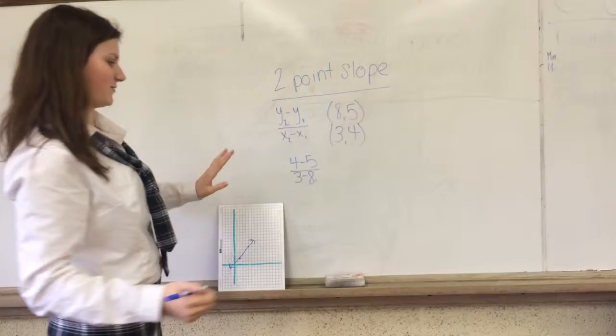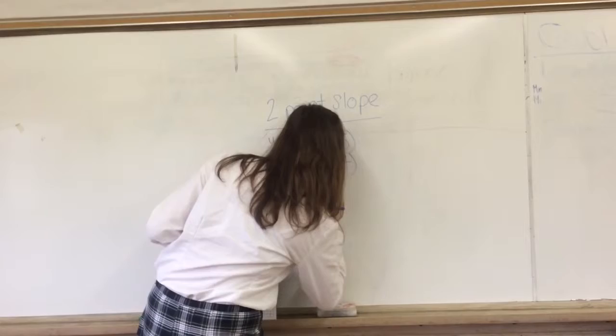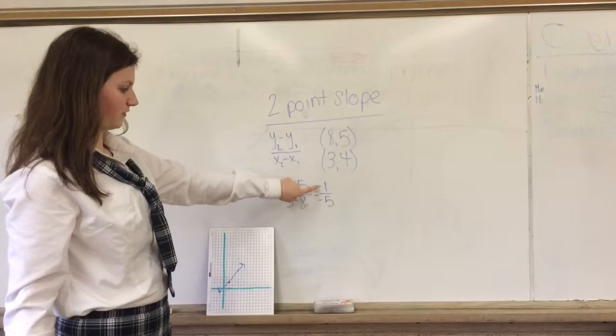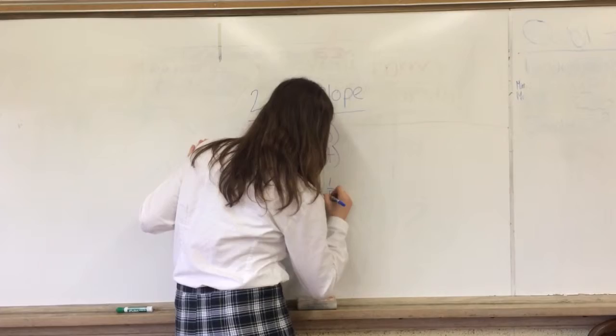And then you just solve the problem, and then you'll find your slope. And since those are both negatives, the negatives cancel out, so that would equal to a positive 1 over 5.